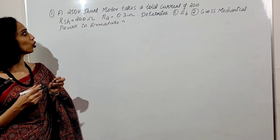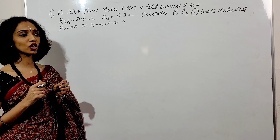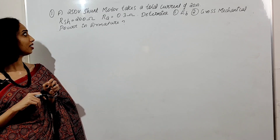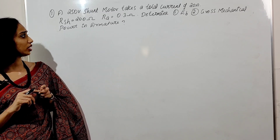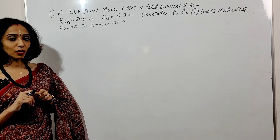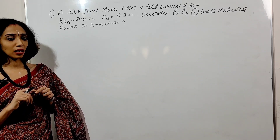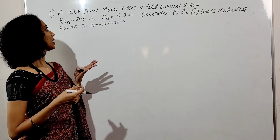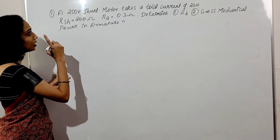This 250 volt shunt motor takes a total current of 20A. RSH is equal to 200 ohm. RA is equal to 0.3 ohm. Determine the back EMF and gross mechanical power. Given data: